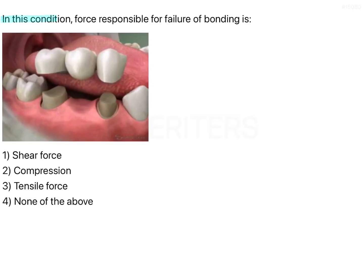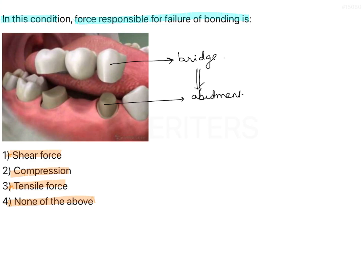In this condition the force responsible for failure of bonding is shear force, compression, tensile force, or none of the above. There is a 3-unit bridge in the given image. This bridge is going to be cemented on the abutment, and the bond between them is called shear bond.